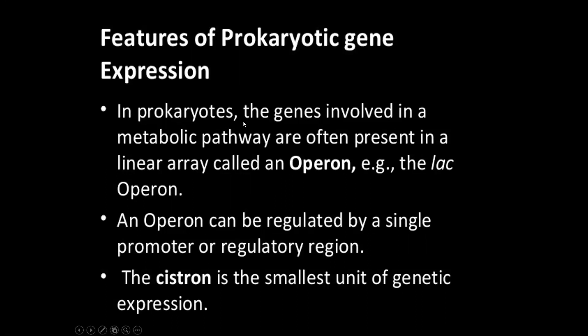In prokaryotes, the genes involved in a metabolic pathway are often present in a linear array called operons. The genes are not monocistronic like in higher organisms — they are polycistronic. An operon can be regulated by a single promoter or regulatory region. The cistron is the smallest unit of genetic expression.